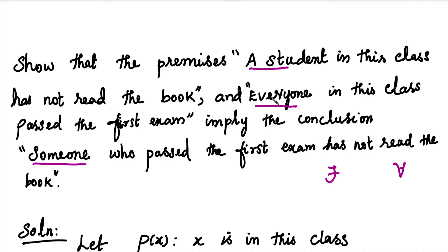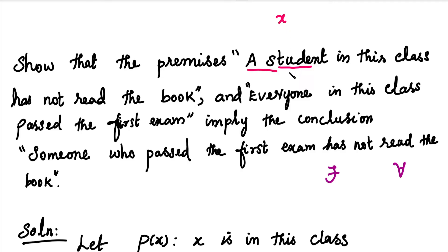In this problem, we will use different names for the predicates. We will identify the premise statements and the conclusion statement. The first premise: a student in this class has not read the book. We will assign a subject predicate for 'is in this class' and 'has not read the book.'